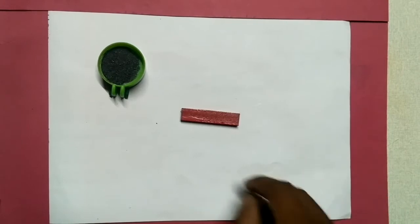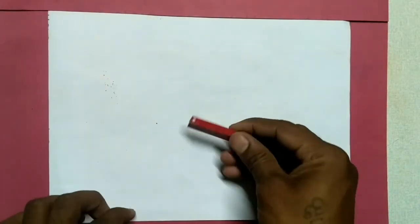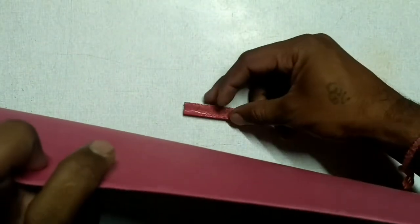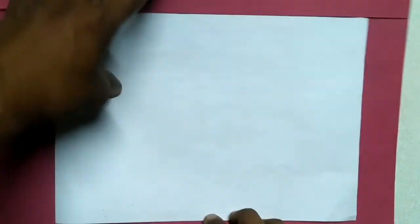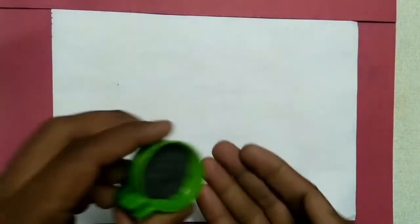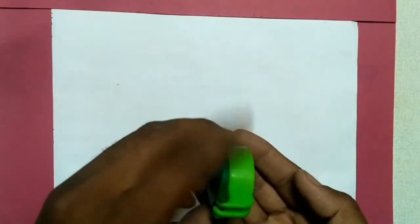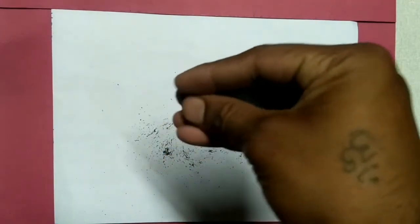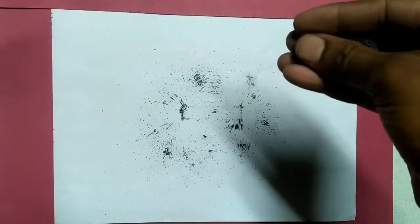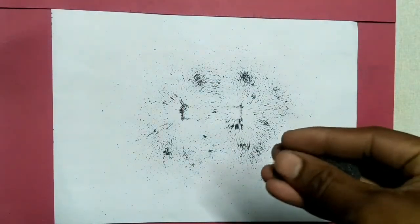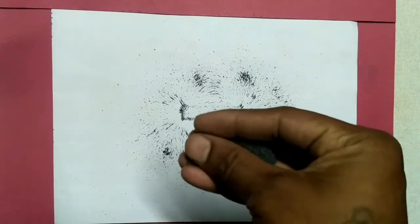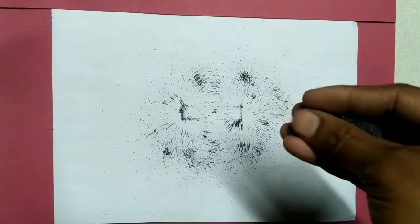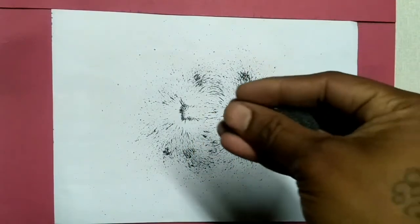Just place this bar magnet below this paper sheet and take the iron dust in your hand and spray it gradually. You can see there is a definite regular structure.